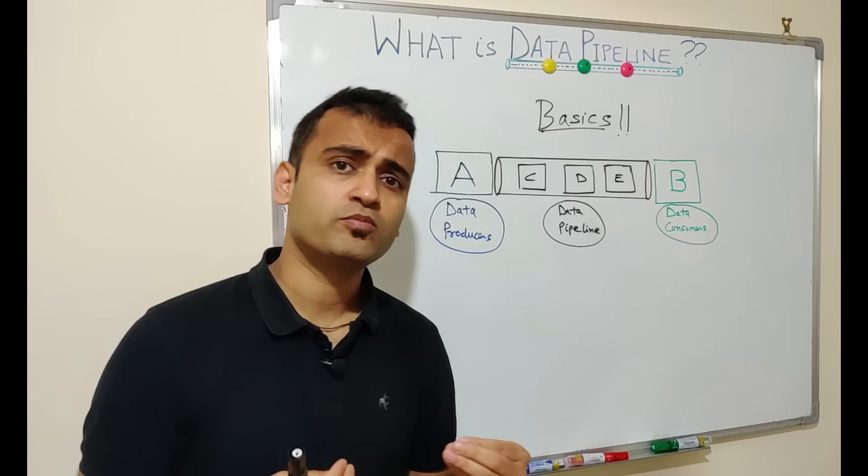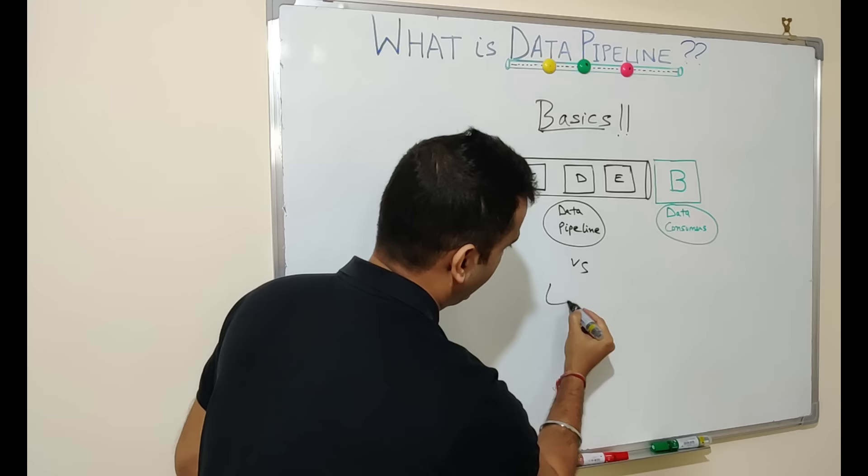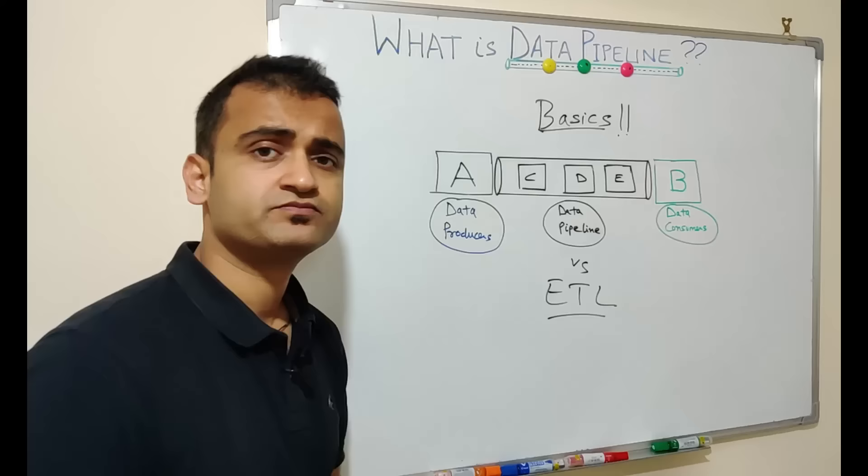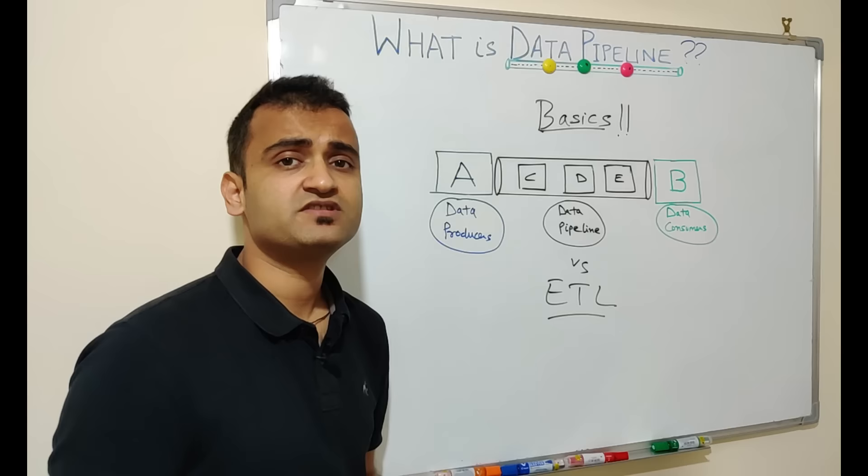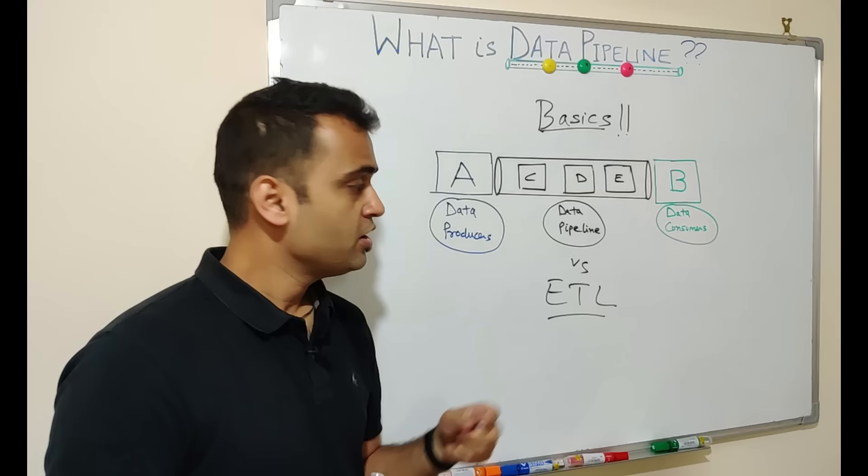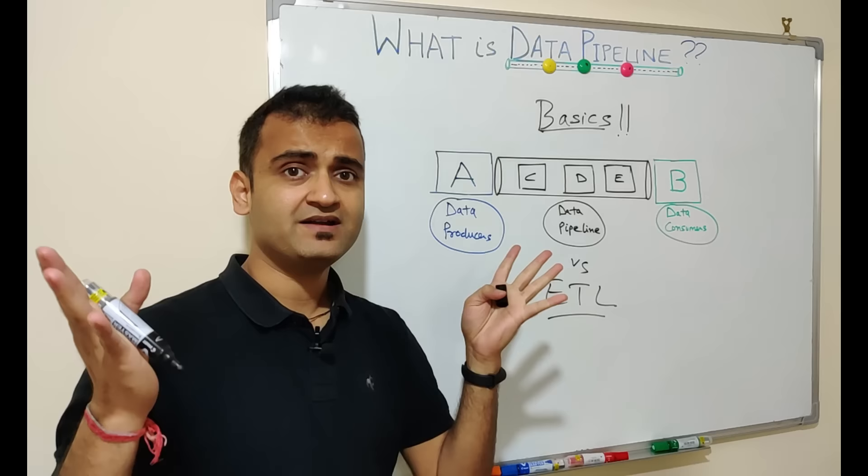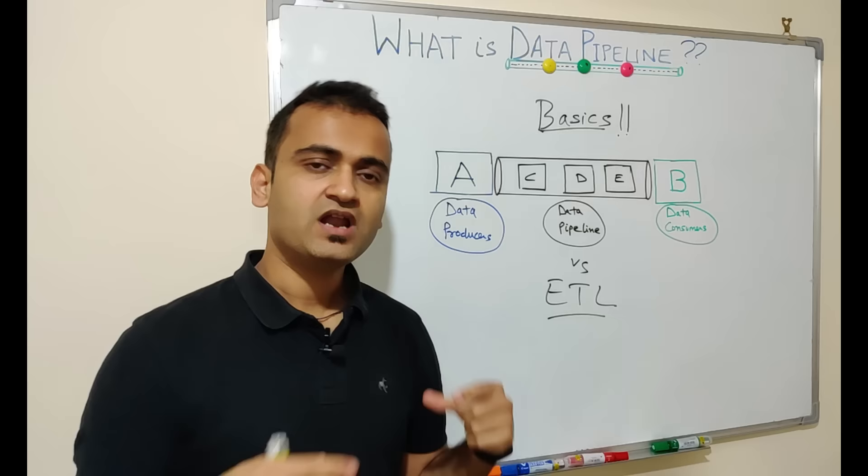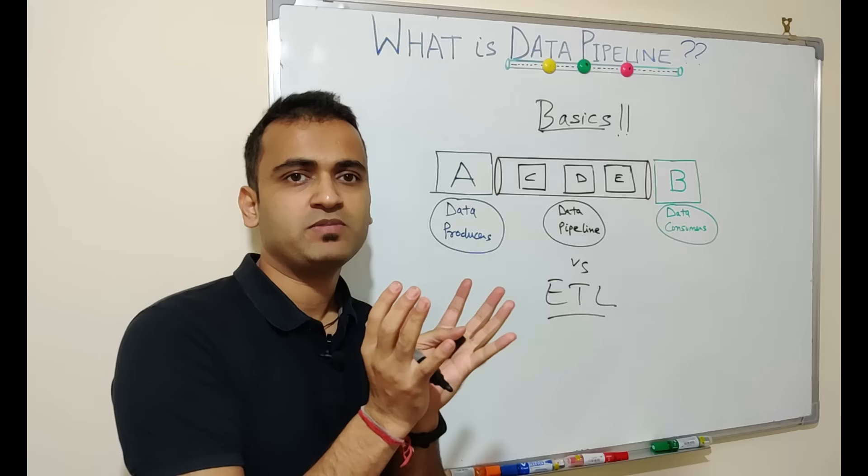A second very obvious question which might come to your mind is what is the difference between a data pipeline and a traditional ETL technology. This is a valid question because ETL pretty much does the same thing. Data pipeline is considered as a parent set under which ETL is a subset. Data pipeline is a broad umbrella under which ETL falls and fills a certain area of the data pipeline mechanism.